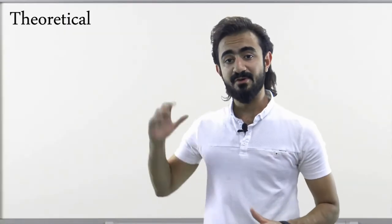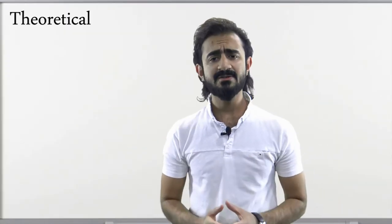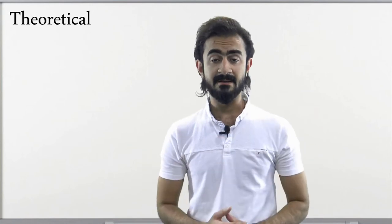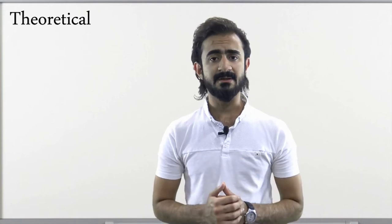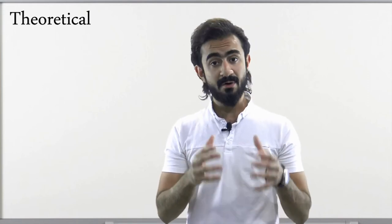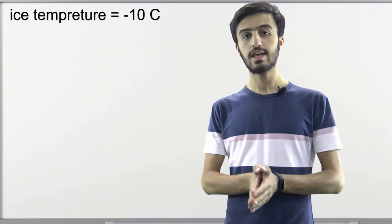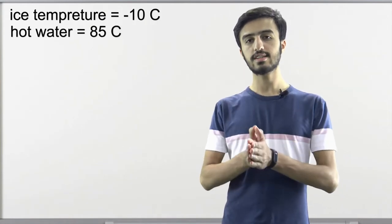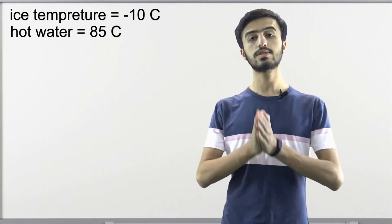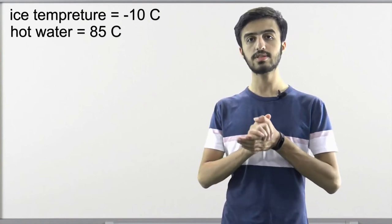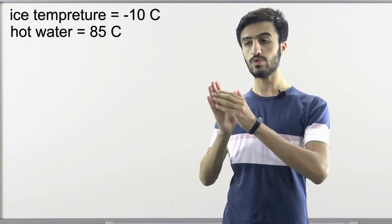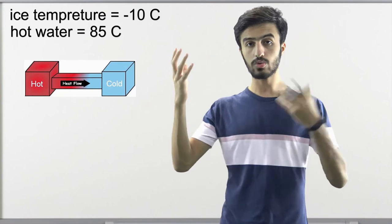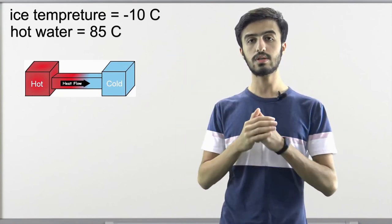Now we're moving on to the theoretical part of our experiment. Starting off by assuming that the system is fully insulated, the law of conservation of energy applies, meaning the amount of energy within the system remains constant. We started by adding ice at negative 10 degrees Celsius, then hot water at 85 degrees Celsius. With both bodies of different heat energy levels in the same system, they will eventually reach thermal equilibrium as the second law of thermodynamics states — heat energy flowing from the hot body to the ice until the temperature remains constant.